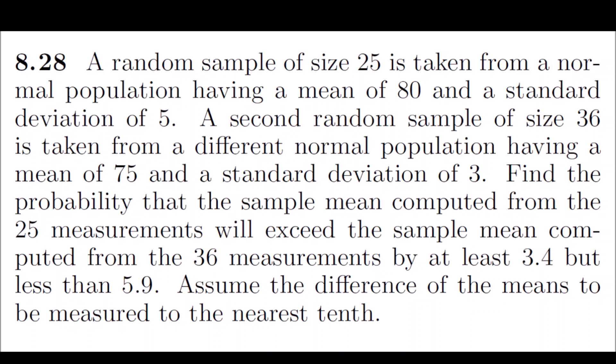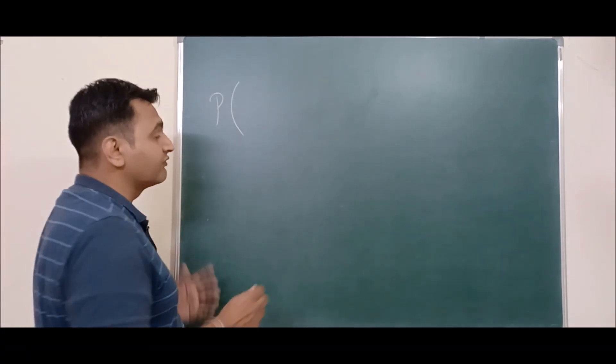Example 3: A random sample of size 25 is taken from a normal population with mean 80 and standard deviation 5. A second sample of size 36 is taken from a different normal population with mean 75 and standard deviation 3. Find the probability that the difference of sample means x̄₁ - x̄₂ is at least 3.4 and less than 5.9.